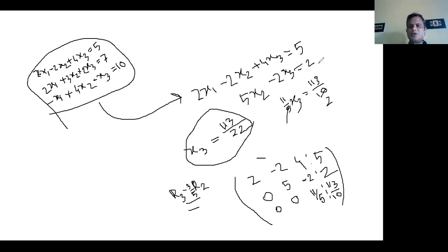When we put this value to x3, we will put the value to x3 to x3, then we have x2 and x2 and x1.